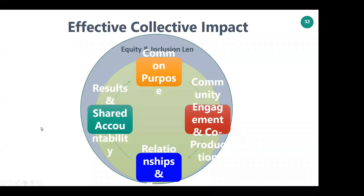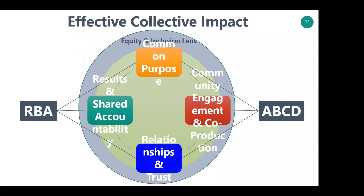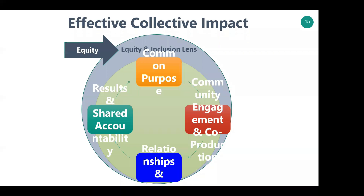Effective collective impact, based on my experience, really relies on a few things: being very clear about common purpose, community engagement and co-production, relationships and trust, and shared accountability and results. Results-based accountability and asset-based community development can help us do all of these things — that's why I developed the paper through the lens of ABCD and RBA. But it must start on a foundation of equity and inclusion.